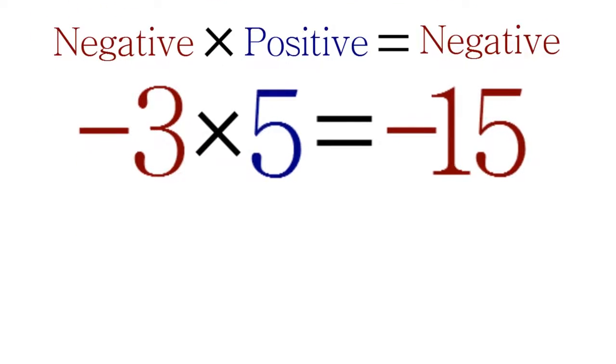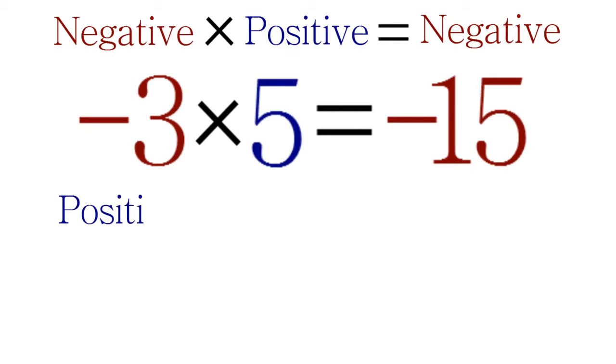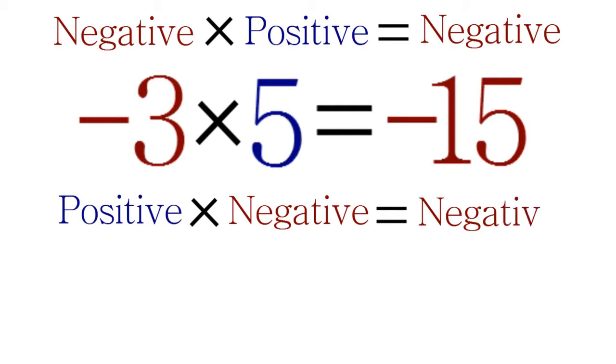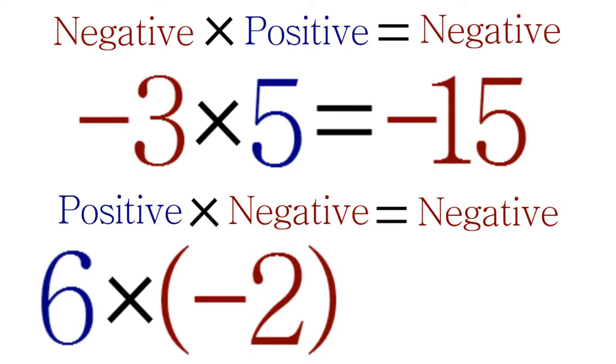The same idea is true when you reverse the order of the positive and negative numbers. For example, suppose you want to multiply 6 × (-2).